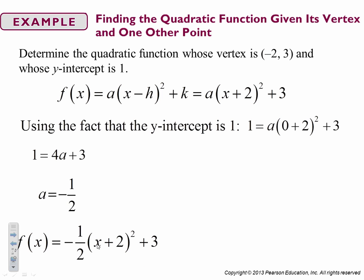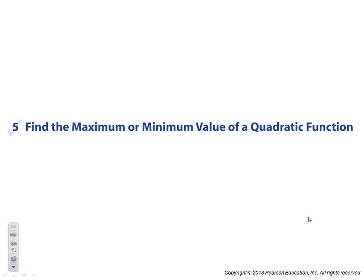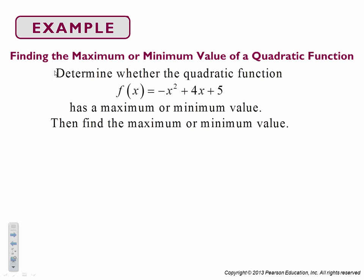f of x is equal to negative one-half x plus two squared. So given those pieces of information, it looks like this.